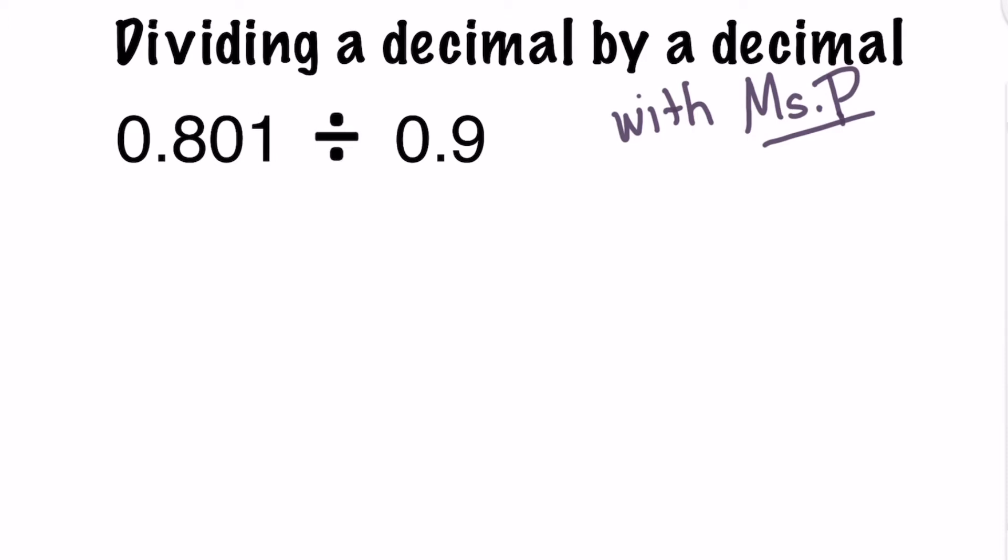So whenever we see a division problem that involves a decimal, we have to ask ourselves, is the divisor a decimal? Now in this case, we can see that both the divisor and the dividend are decimals. So we check both numbers, but the most important here is for us to know that the divisor is a decimal.